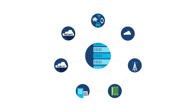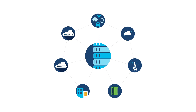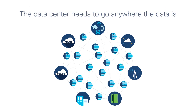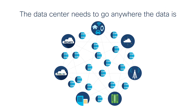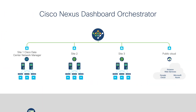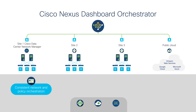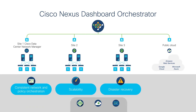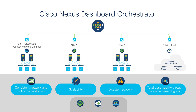That means your operations are getting more and more distributed, so you need a way to consistently orchestrate network and segmentation policies across multiple sites and regions. Cisco Nexus Dashboard Orchestrator provides a single point of control as your data center goes wherever the data is, delivering consistent network and policy orchestration, scalability and disaster recovery across your environments, with total observability through a single pane of glass.